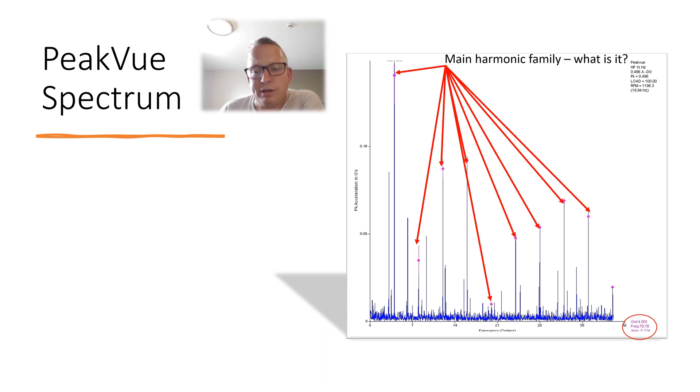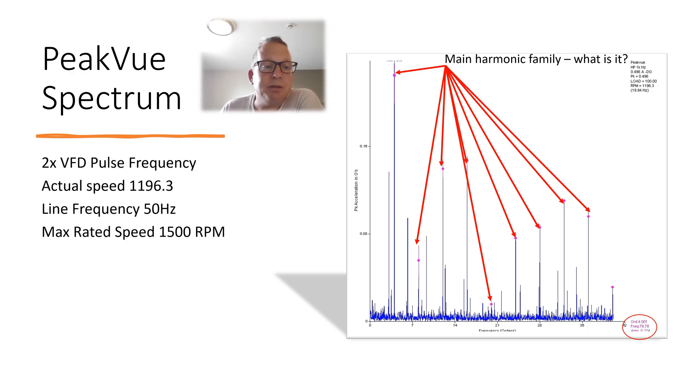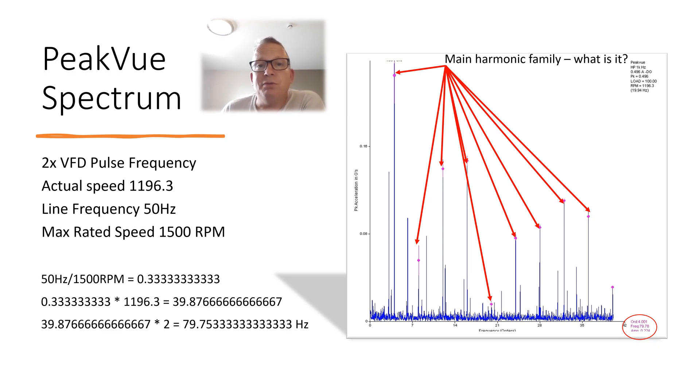So what is this harmonic family? We're doing an asset assessment. Is it to be of concern? Well, this is a motor on a variable speed drive. So the actual speed was tacked at 1196.3, 59 hertz, max rated on four poles is 1500 RPM.